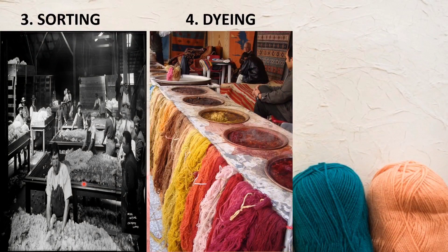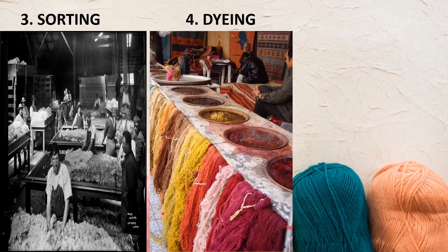The next step is dyeing. The wool fibers are dyed with different colors — you can see red, pink, yellow, and brown. The fiber is kept in the dye for a particular amount of time, then removed and dried so that the dye is properly retained in the wool.